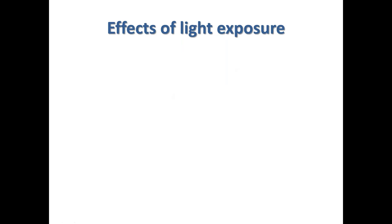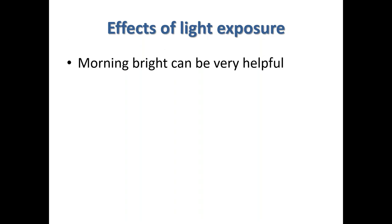Now I want to talk about light exposure. Getting sufficient light is important for regulating sleep. Getting bright light in the morning helps to strengthen your internal clock — it doesn't affect sleep directly, but by getting your body on a good regular rhythm, it improves sleep indirectly. One of the best things to do is, in the first few hours after waking, sit by a window, sit outside, or go for a walk to get bright sunlight. That can be really helpful.